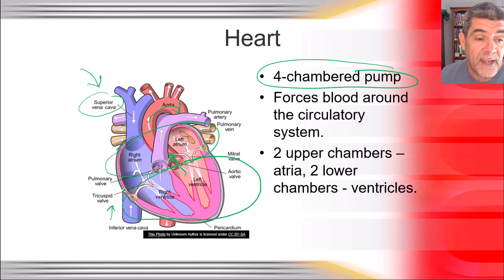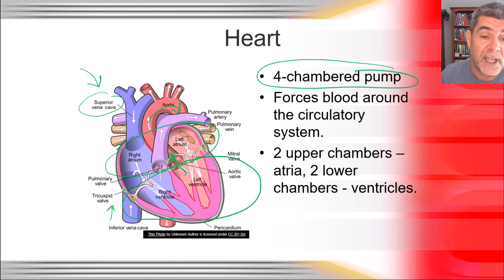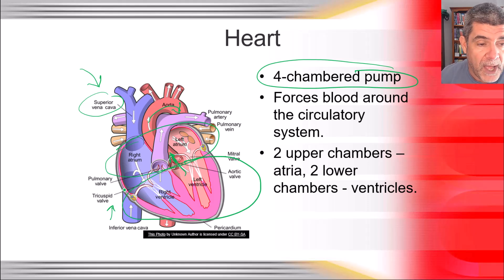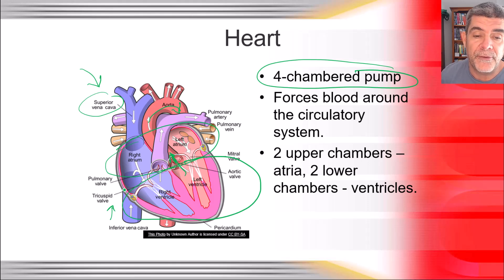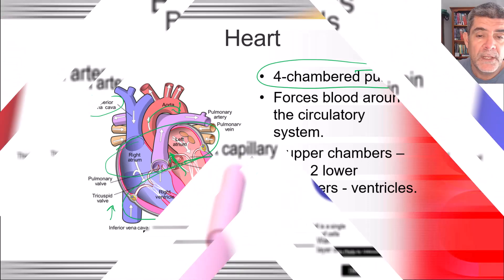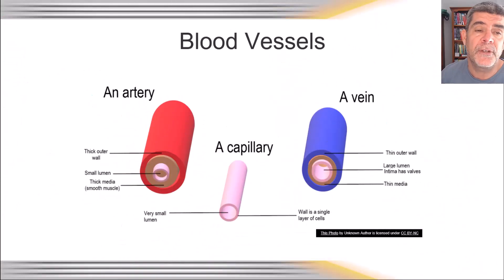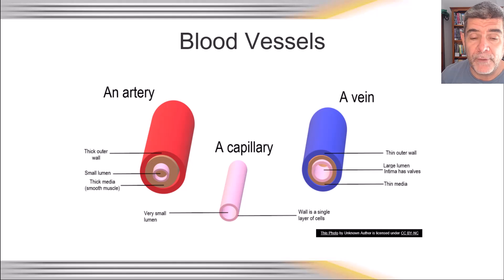Blood then returns through the pulmonary vein into the left atrium, into the left ventricle, and that very strong muscular pump pushes blood through the rest of the body. It's useful to look at some of these structures at a micro level as well, because that's when you can see some of the differences between them.